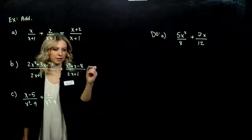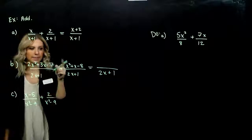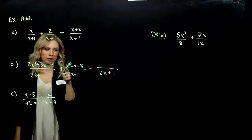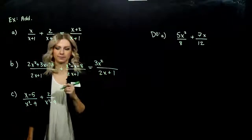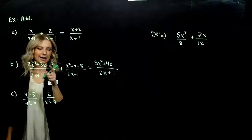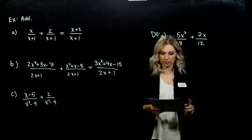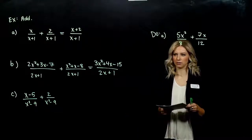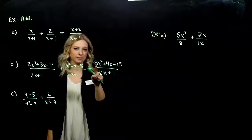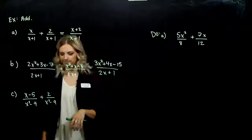Next one. Again, same denominator, so we're going to end up with the same denominator, and I have addition in between. So I just need to combine my like terms in the numerator and simplify. I've got 2x² and 1x² will give me 3x². 3x and 1x will give me 4x. And negative 7 and negative 8 will give me negative 15. We want to see if we can break that down any farther. We could try to factor the numerator, but 3 is prime, so our only options are 3 and 1 — we'll never get a 2 out on the front to cancel. So that's done.